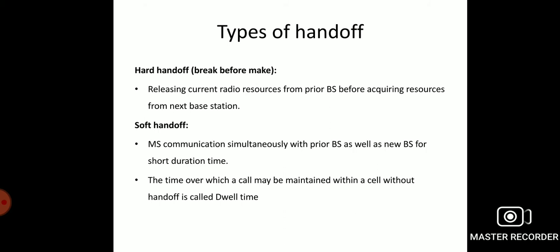Now we can move to the types of handoff technique. There are two types of handoff procedures. Number one, hard handoff. Number two, soft handoff. Hard handoff is break before make, that is releasing the current radio resources from prior base station before acquiring the resources from next base station. The soft handoff is when the mobile station communicates simultaneously with prior base station as well as the new base station for short duration time. The time over which a call may be maintained within a cell without handoff is called dwell time.